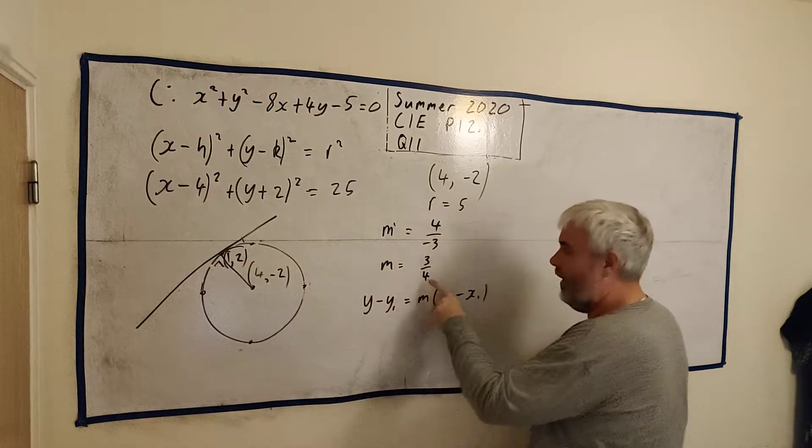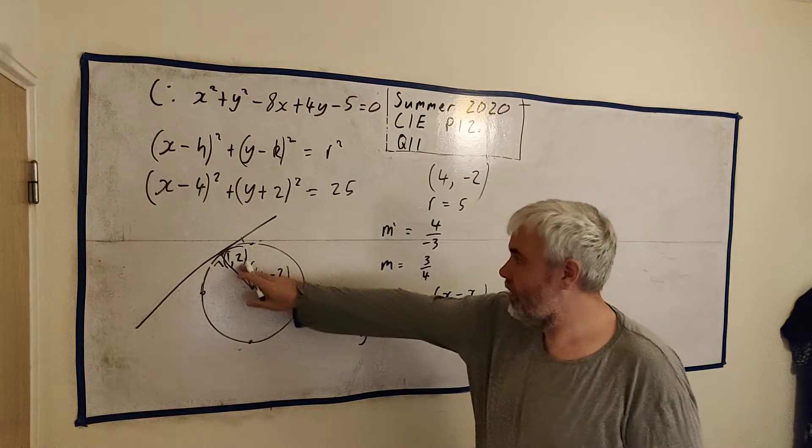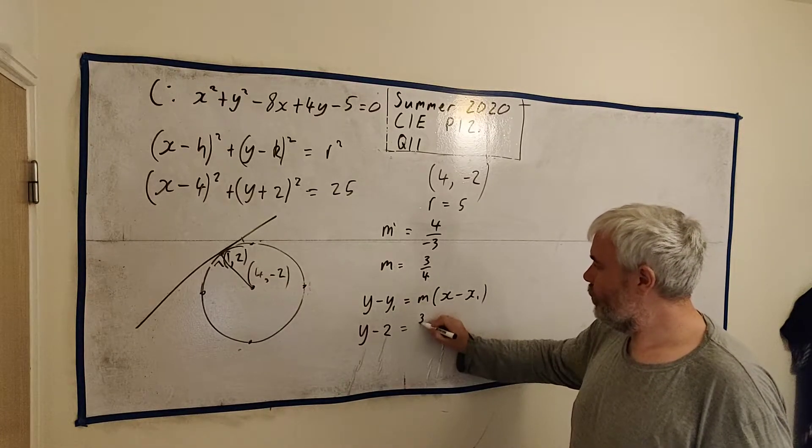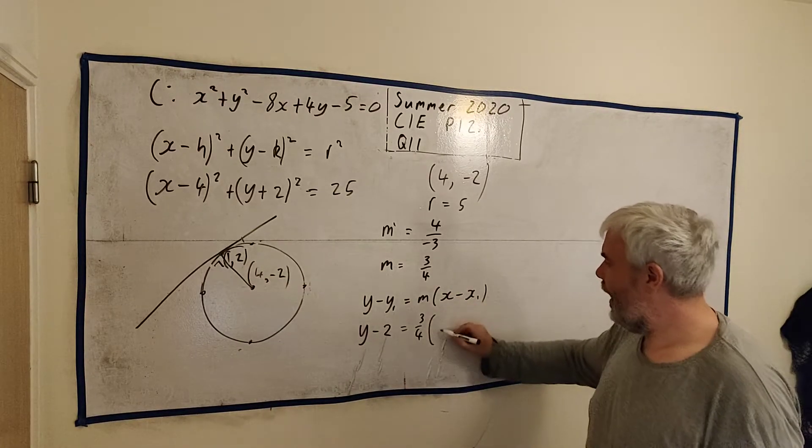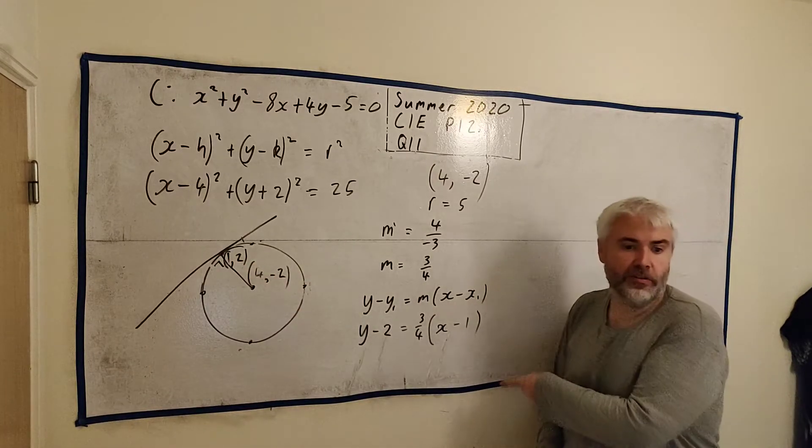There's a couple of ways to do it. I like to use this one. y minus y1 equals m times x minus x1. I just fill in the points. I know x1, y1 and m. So I just fill these in. y minus 2. I've got that 2 there. Equals 3 over 4. x and I'll take the 1 here. Minus 1.